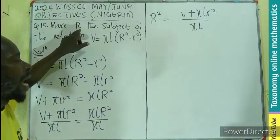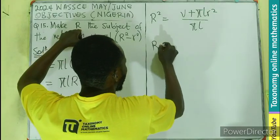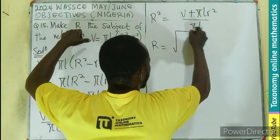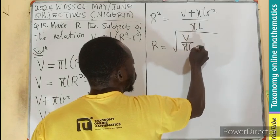But still we are looking for R, so we need to find the square root of both sides. That will make your R equal to the root of the entire expression.